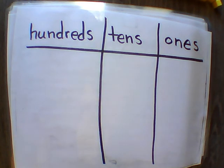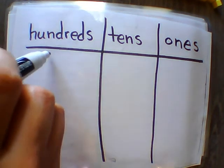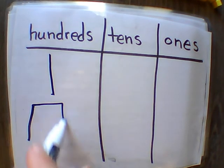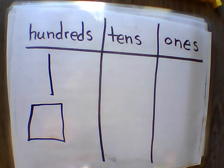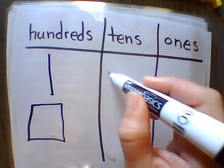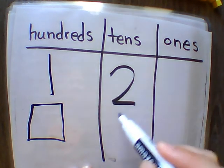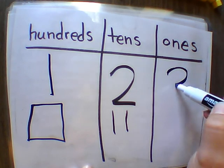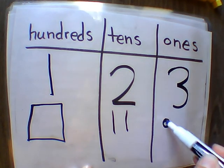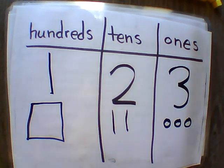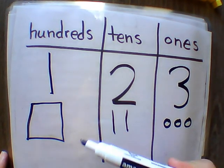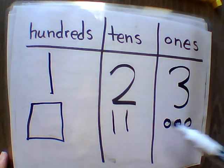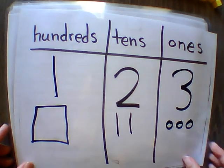Let's look at our hundreds, tens, and ones. We have one hundred, we have two tens, and we have three ones.